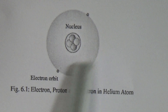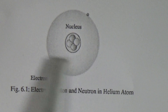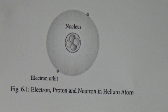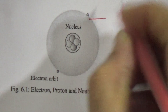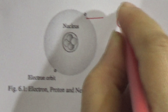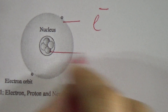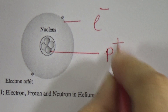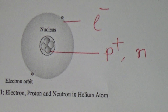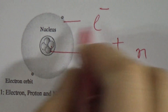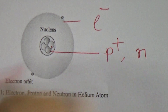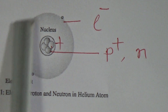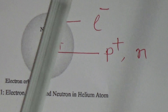The electron orbit surrounds the nucleus, and electrons revolve around this orbit around the nucleus. The charge of an electron is negative. Protons are positively charged and neutrons are chargeless. Therefore, the overall charge of the nucleus is positive and electrons revolve around the nucleus.